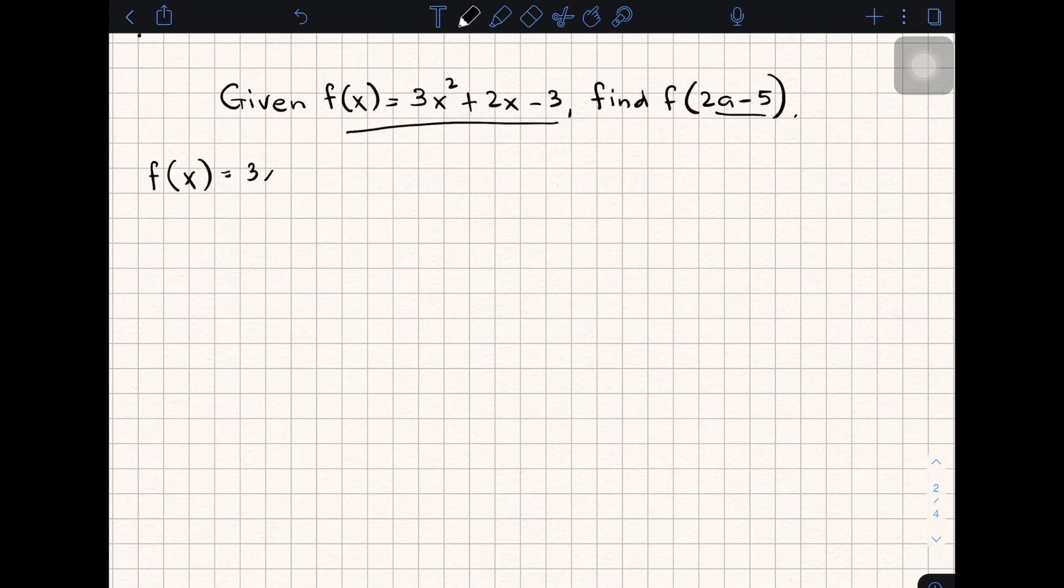So let's have f(x) = 3x² + 2x - 3. We have our input f(2a - 5) = 3 times (2a - 5)² plus 2 times (2a - 5) minus 3.